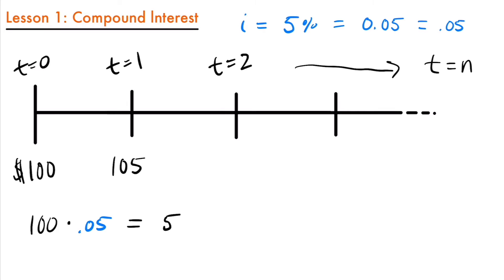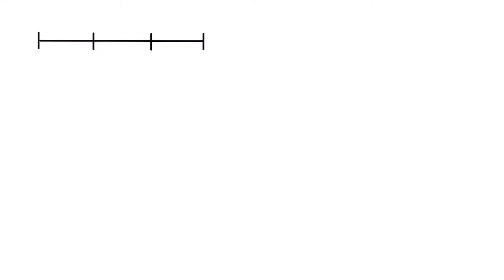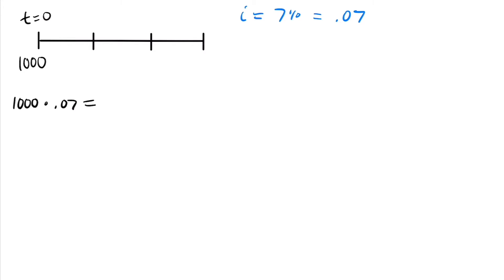Let's look at a more concrete example and develop a formula to calculate compound interest over any period of time. Starting today, I'm going to deposit $1,000 into an account offering an interest rate of 7%. Right away I'll convert this to a decimal: 0.07. This is a yearly compounded interest rate, meaning every year I earn some interest and that interest carries over into the next year. Over just one year: $1,000 times 0.07 gives $70 of accrued interest. Adding that to our $1,000, at the end of year one we have $1,070.